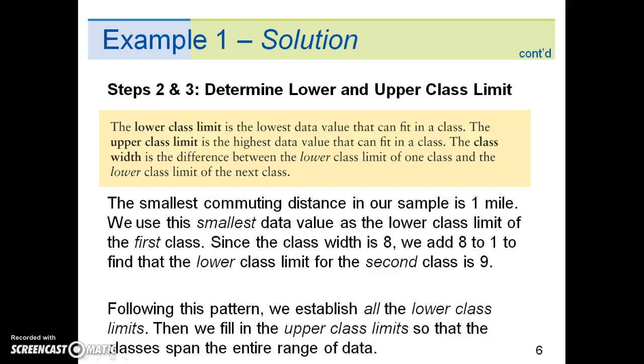The smallest commuting distance in our sample is one mile. We use this smallest data value as the lower class limit of the first class. Since the class width is 8, we add 8 to 1 to find that the lower class limit for the second class is 9.